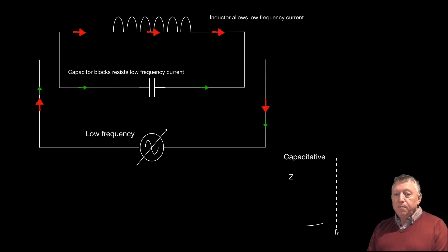Remember the keyword CIVIL, C-I-V-I-L. That will tell you when things are capacitive, I leads V. And then V leads I for an inductive circuit. So initially, then the circuit is capacitive. And as we increase frequency, it remains capacitive until we hit resonance.